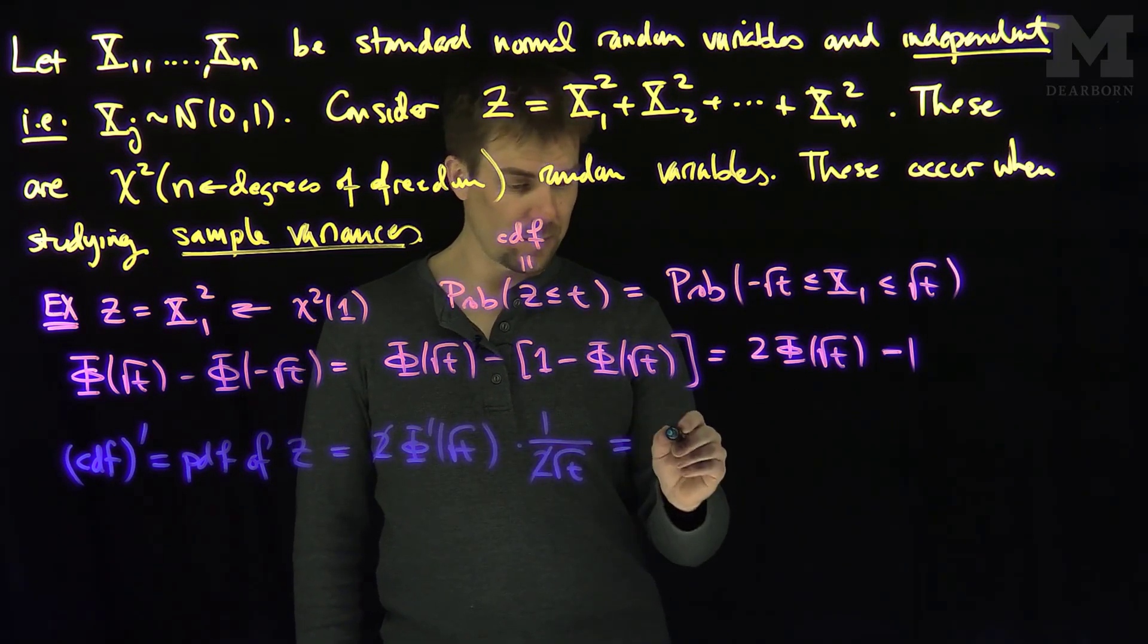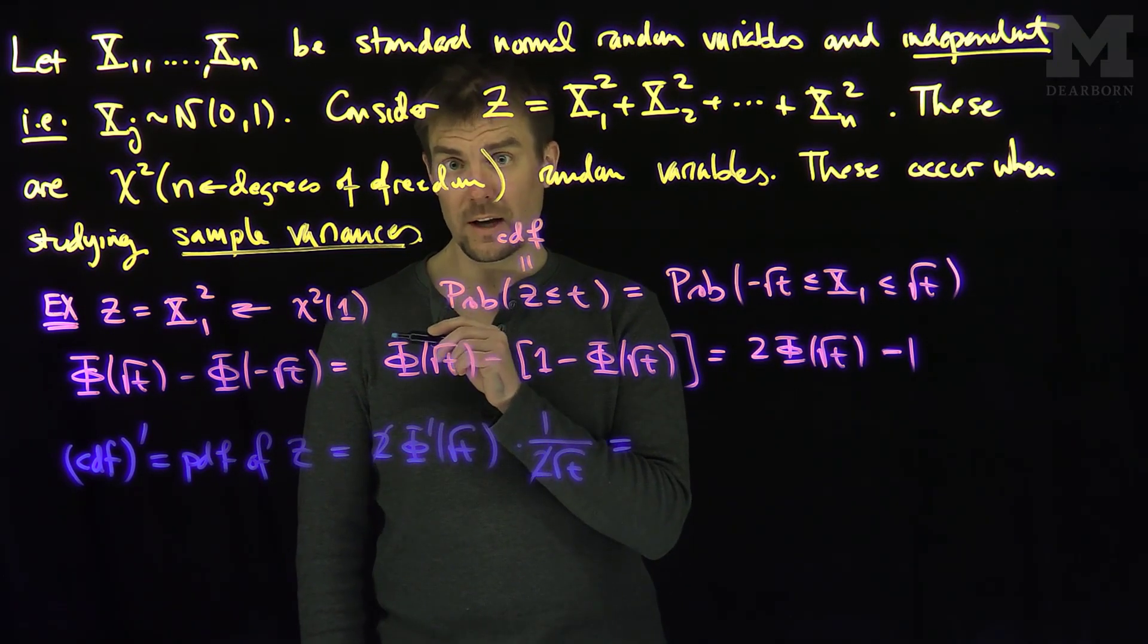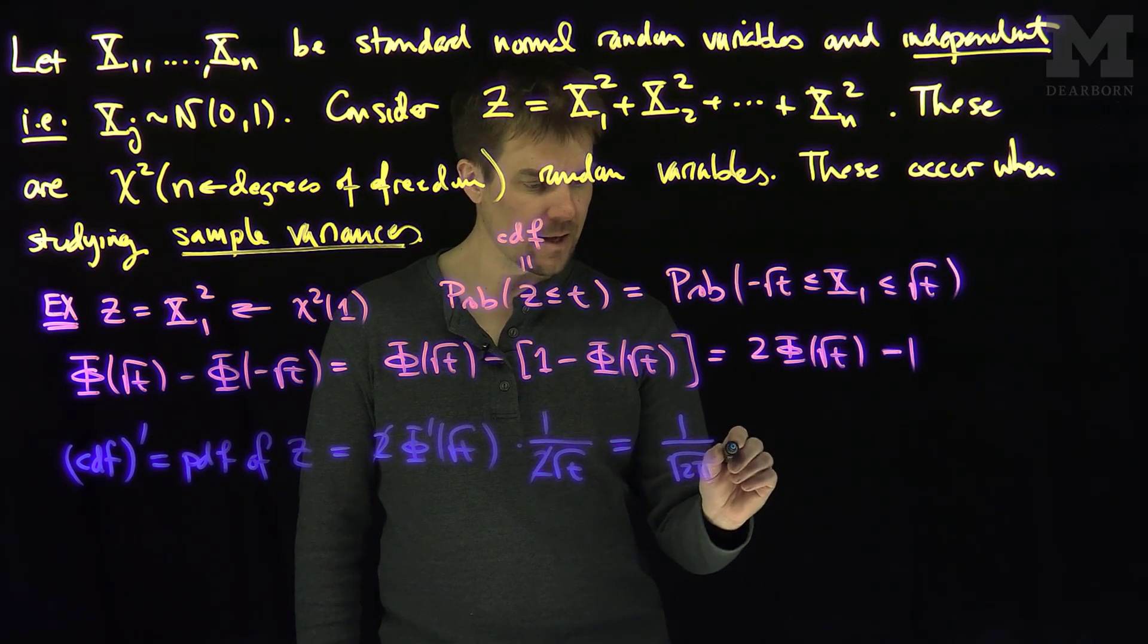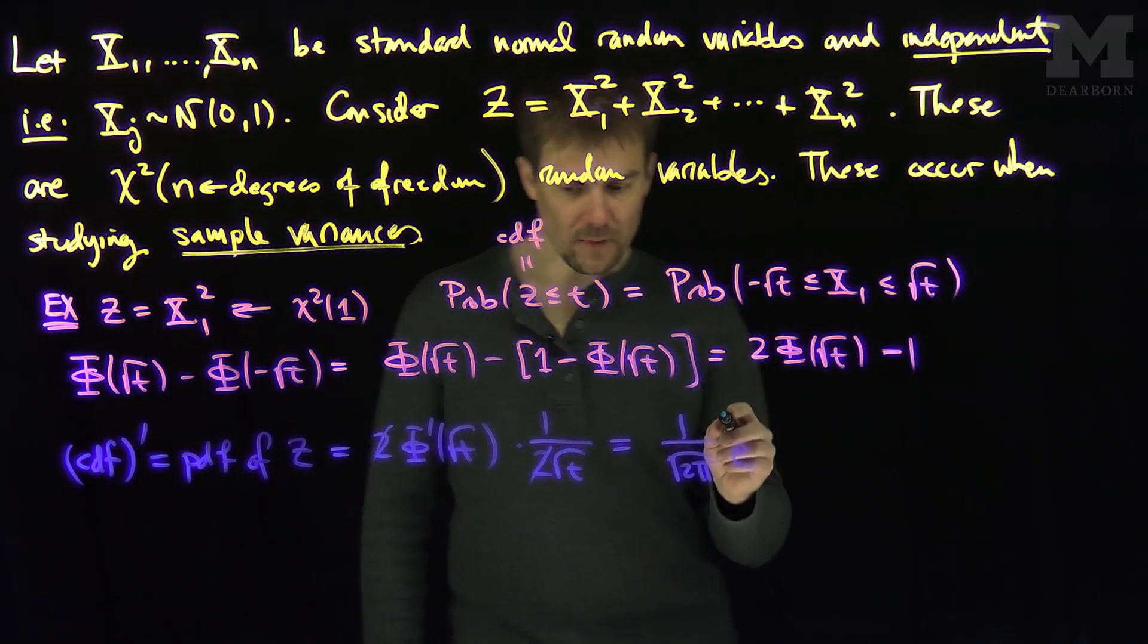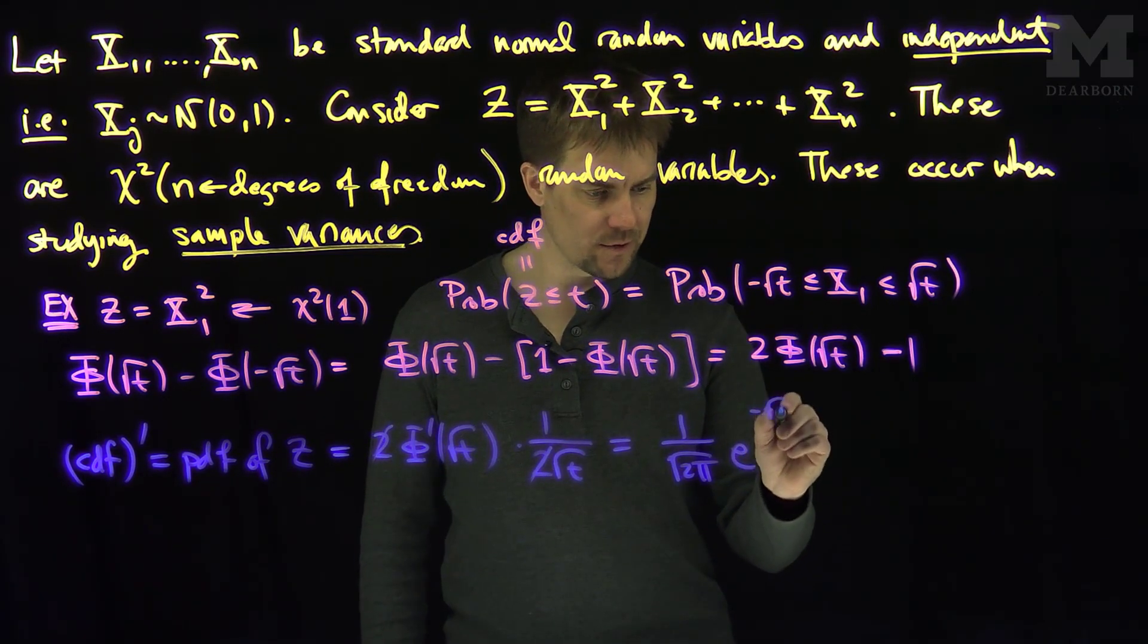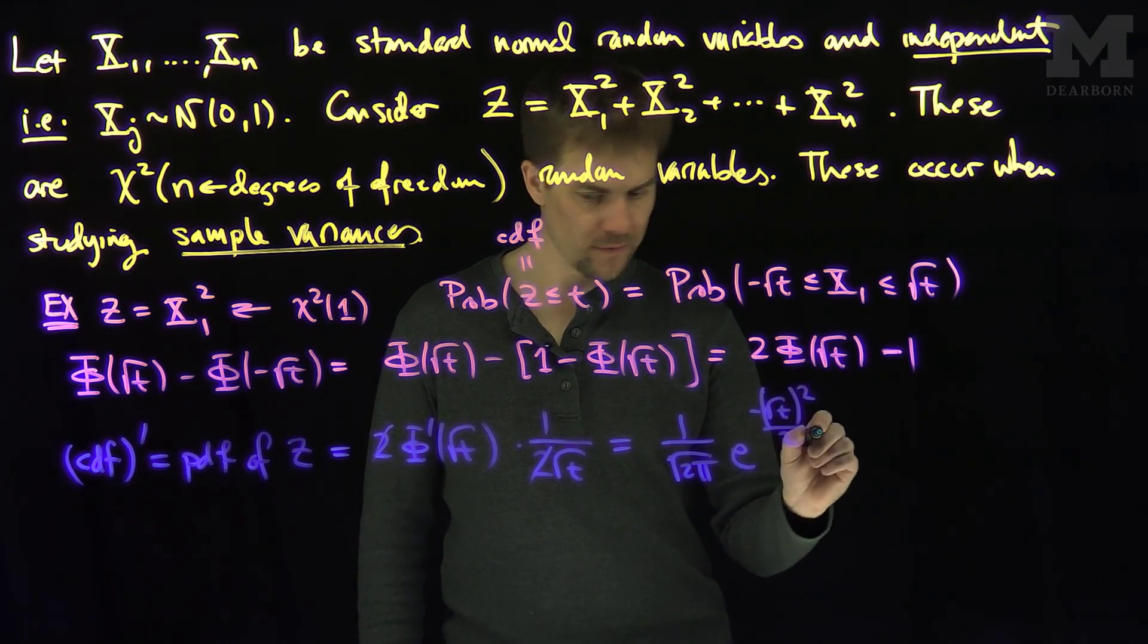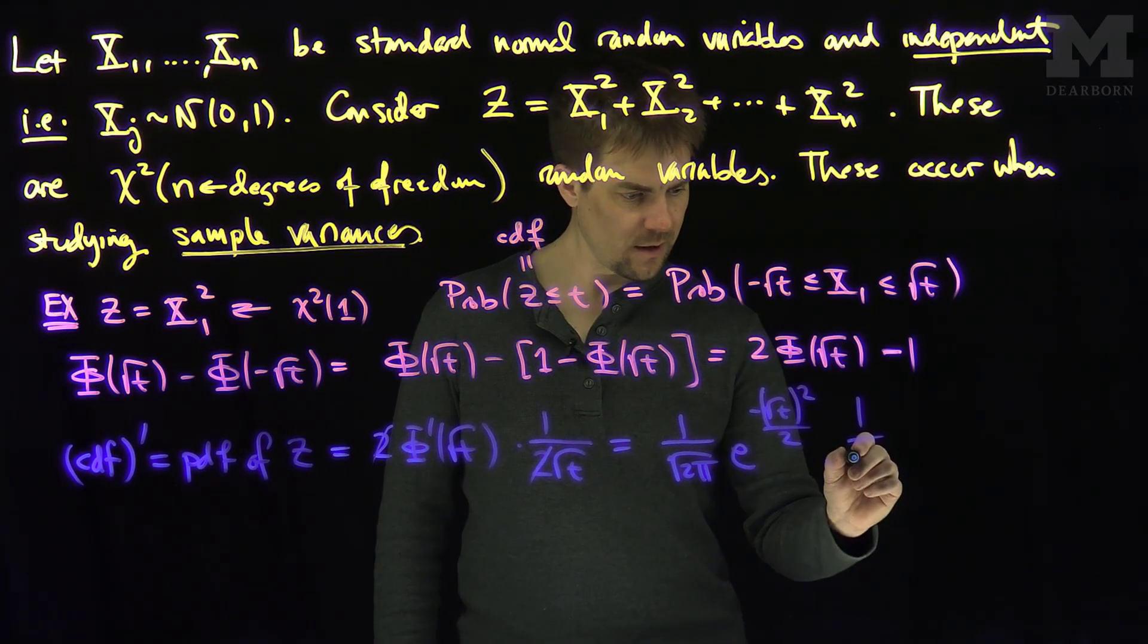And what will this be? This is just the standard normal PDF at root t. So, it's going to be one over the square root of two pi, e to the negative root t, negative root t quantity squared, over two, times one over the square root of t.